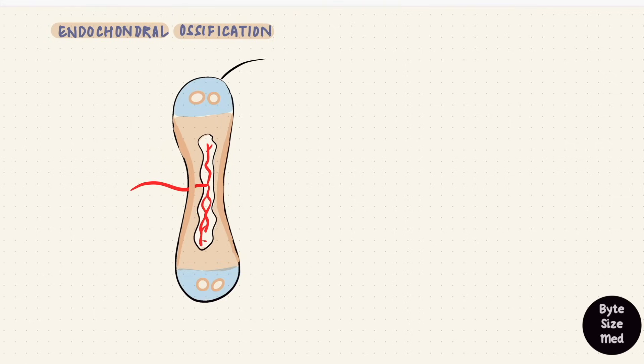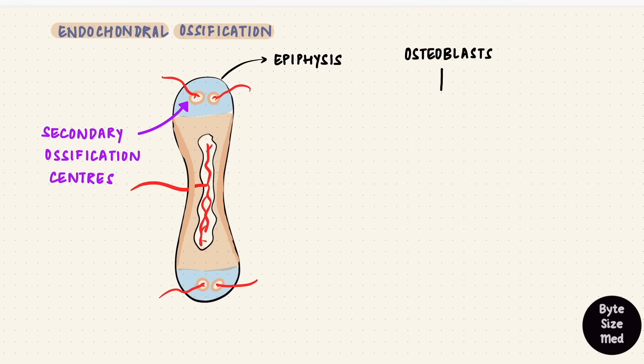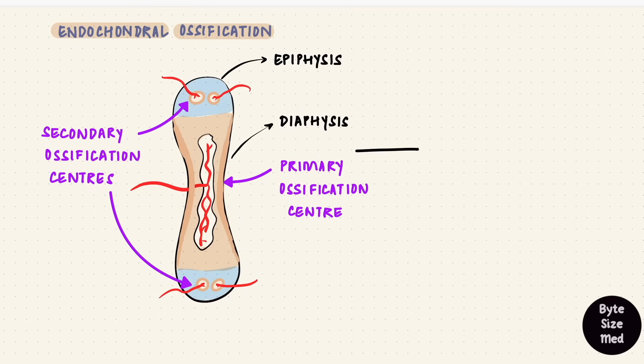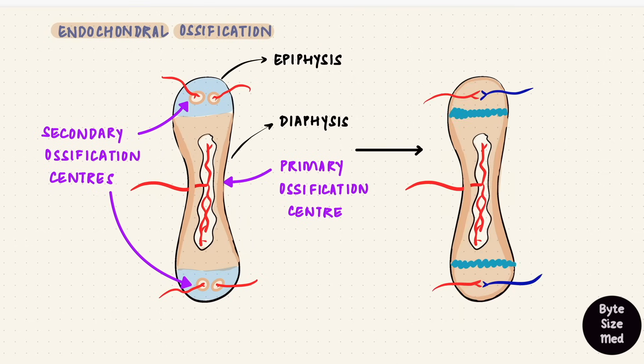The epiphyseal ends develop secondary centers of ossification. They form similarly, with blood vessels and those osteoblasts laying down bone, replacing cartilage. The bone that forms in both cases is osteoid, which then gets calcified to form immature woven bone and then remodeled to form lamellar bone. So there is a primary center of ossification in the diaphysis and secondary centers in the epiphyses. They are separated by a plate of cartilage called the epiphyseal growth plate. The surface of the epiphyses have articular cartilage because they articulate with other bones forming joints. These are the only two sites where cartilage remains.